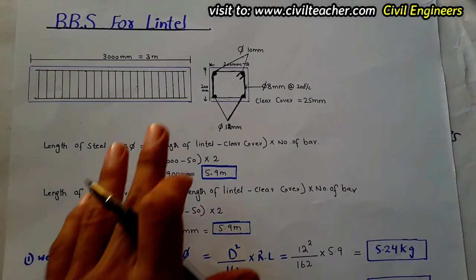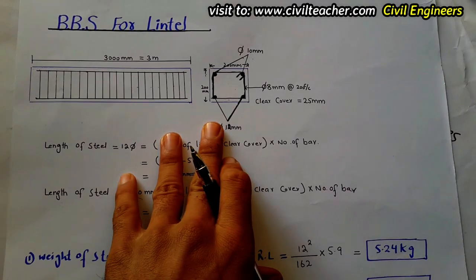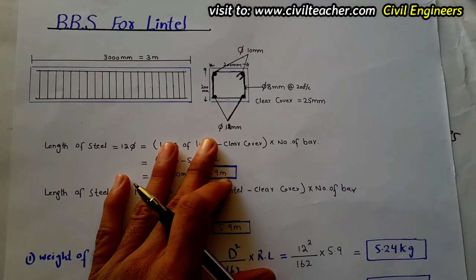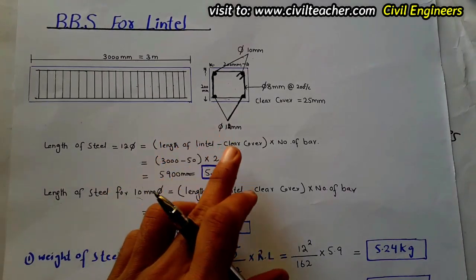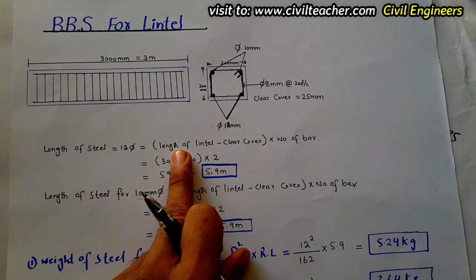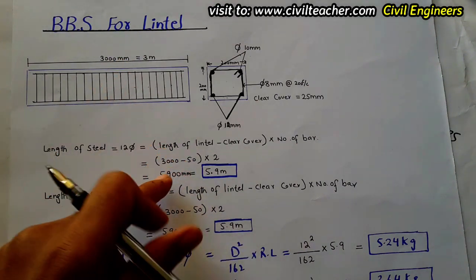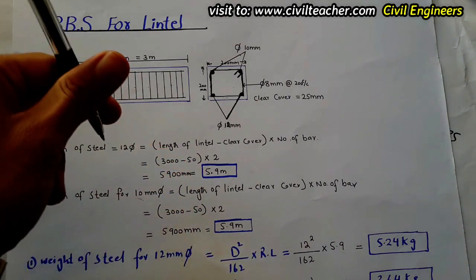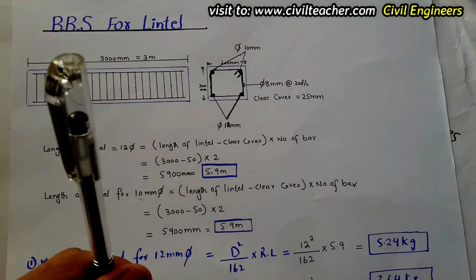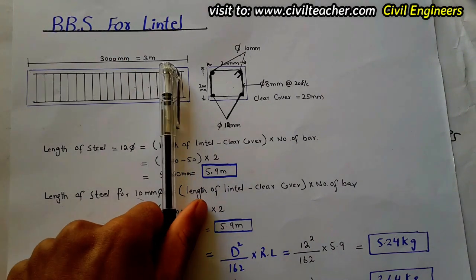So the total weight of steel for the lintel beam BBS is: 4.1 kg (stirrups) + 5.24 kg (12 mm bars) + 3.64 kg (10 mm bars). This completes the bar bending schedule for the lintel beam from start to finish. For more videos, please like, subscribe, and check the article link in the description. Thank you, all the best, bye.